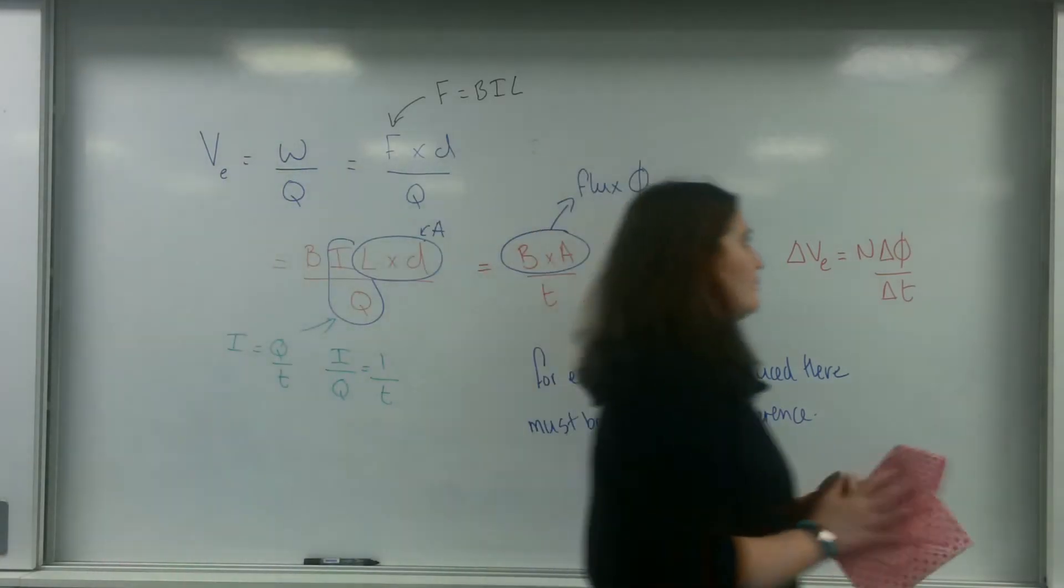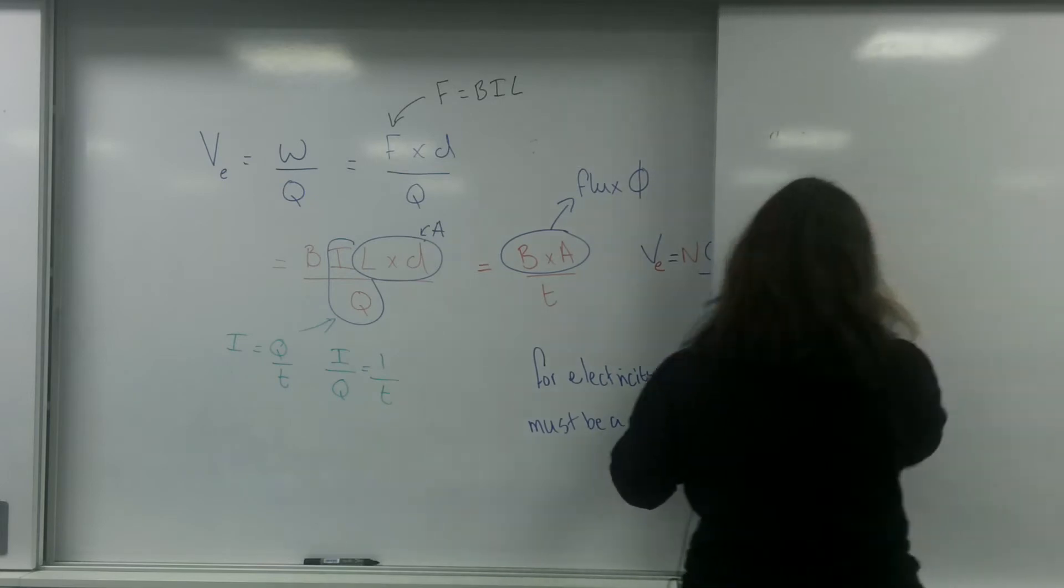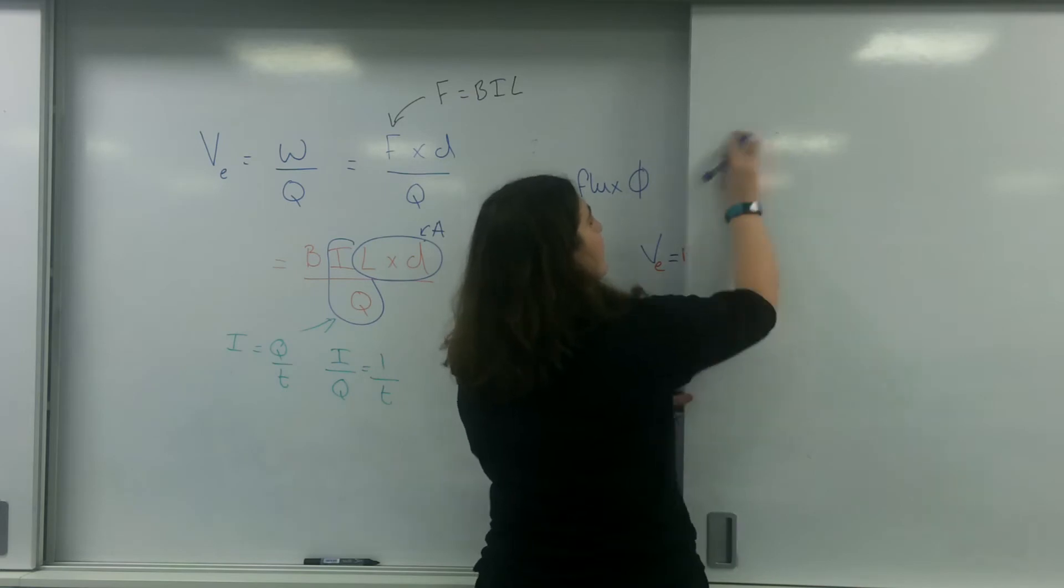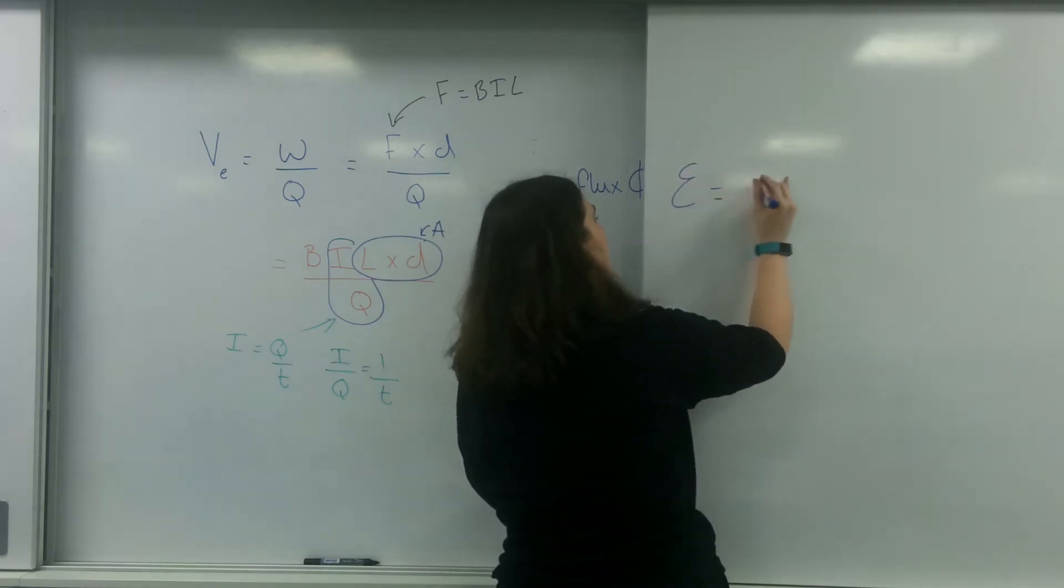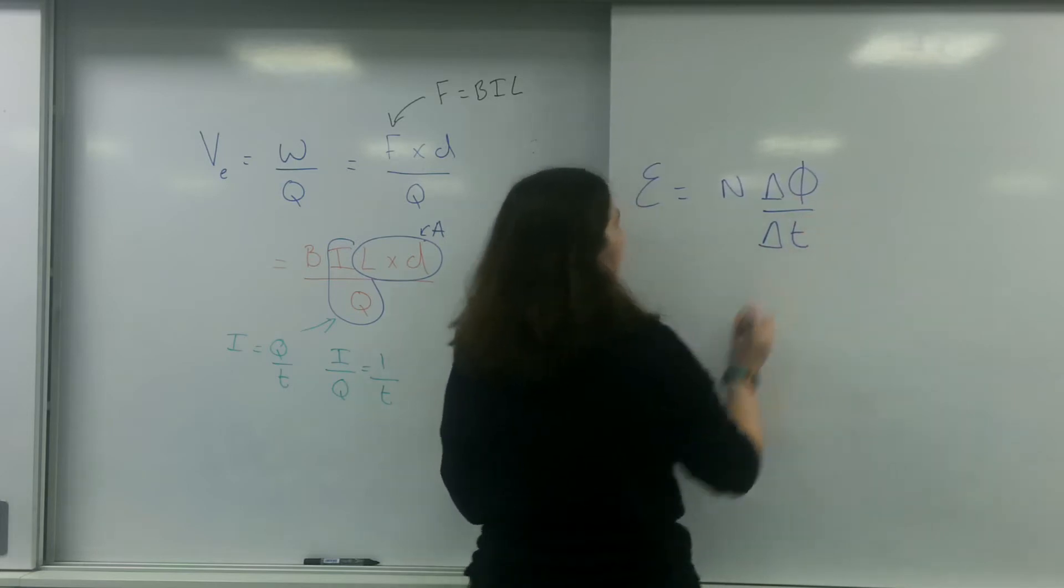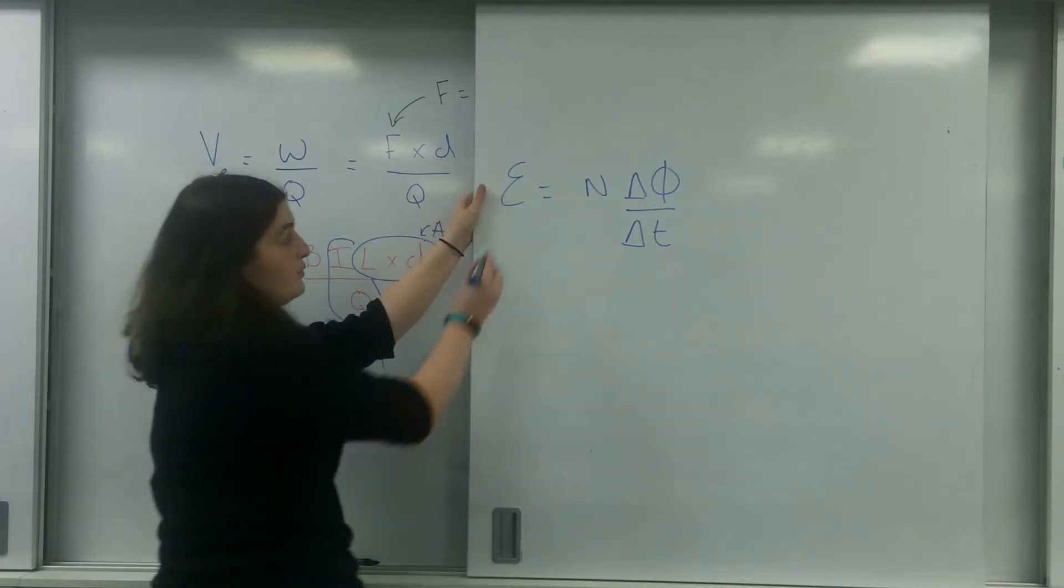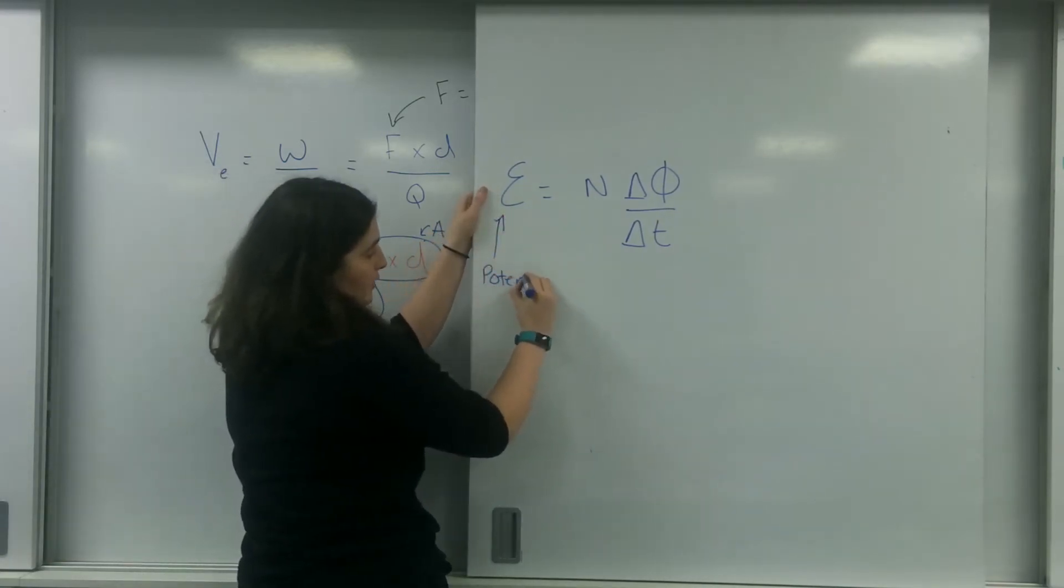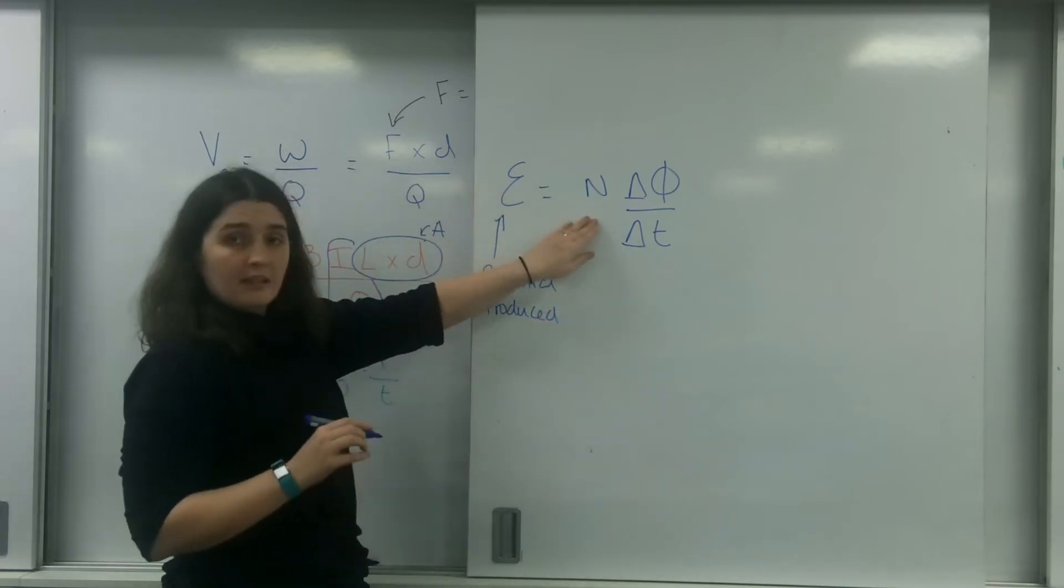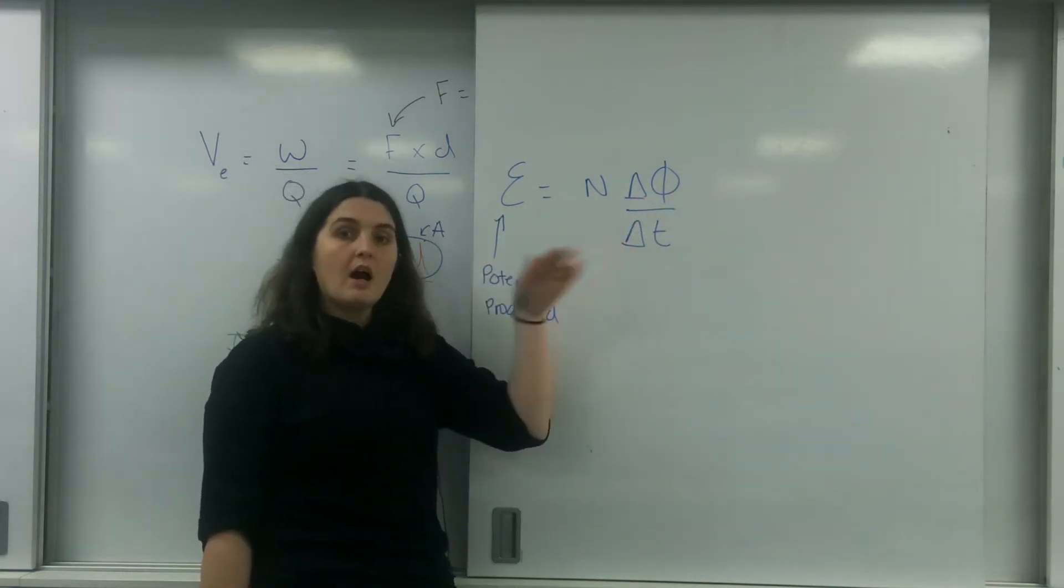In the datasheet, Faraday's law is written like this. The EMF, the energy produced, the potential produced, is N times the change in flux over the change in time.